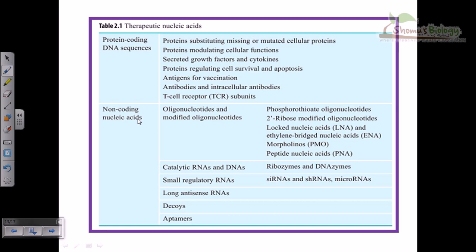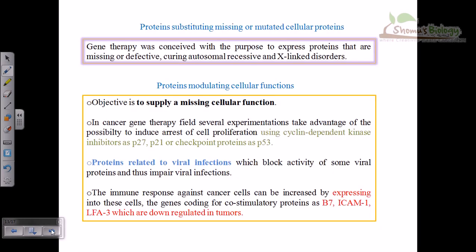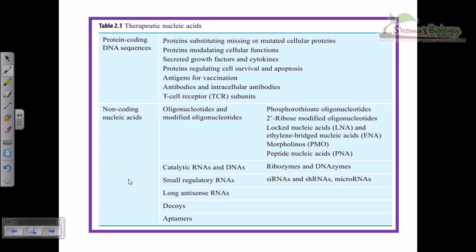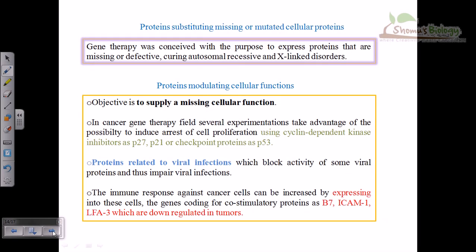Whatever we are taking and utilizing, there are advantages as well as disadvantages. We can take both types — for example, antigens for vaccination, secreted growth factors and cytokines, small regulatory RNAs from the non-coding part, and catalytic RNAs and DNAs such as ribozymes and DNA enzymes.